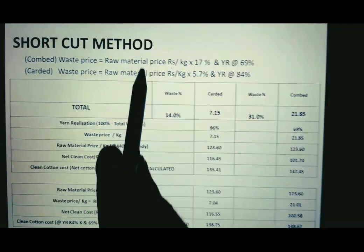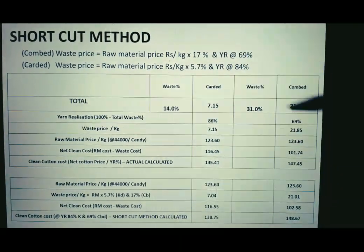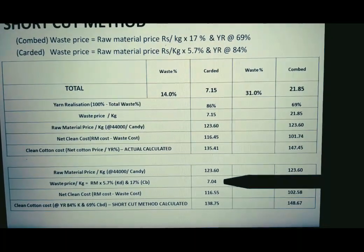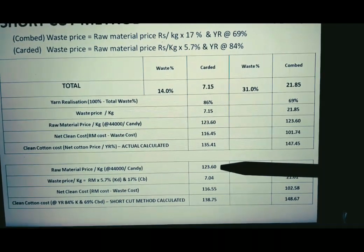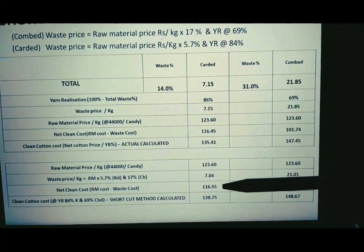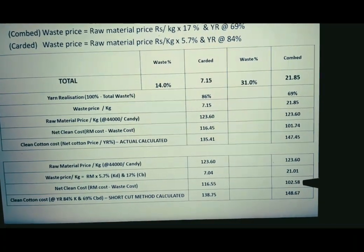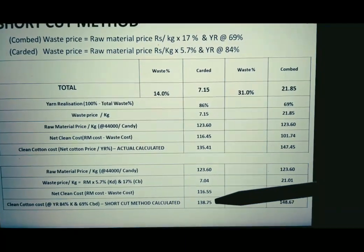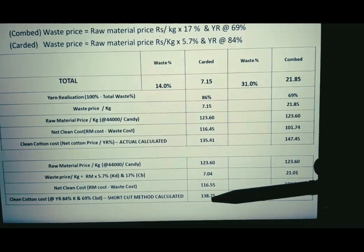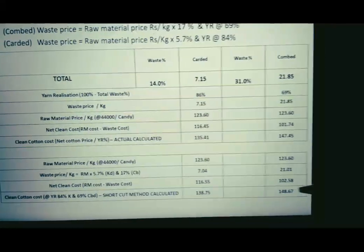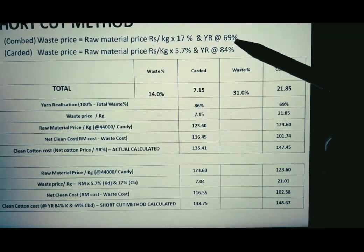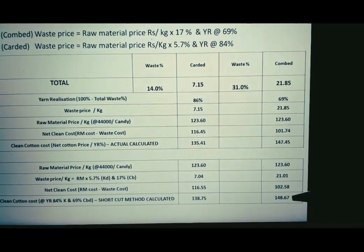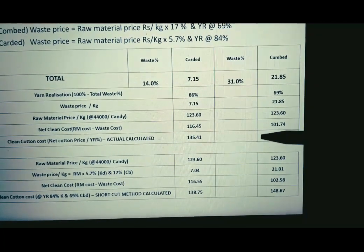For combed, raw material price (rupees per kg) multiplied by 17% gives the waste price. For carded, raw material price multiplied by 5.7% gives the waste price. Subtracting waste price from raw material price gives net clean cost for each. Dividing net clean cost by 84% recovery gives a carded clean cotton cost of 138.75 rupees, compared to the actual 135.41. For combed, dividing by 69% recovery gives 148.67 rupees versus the actual 147.45 — a close tentative estimate.